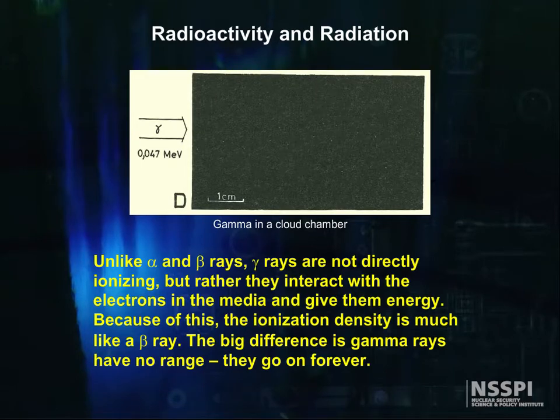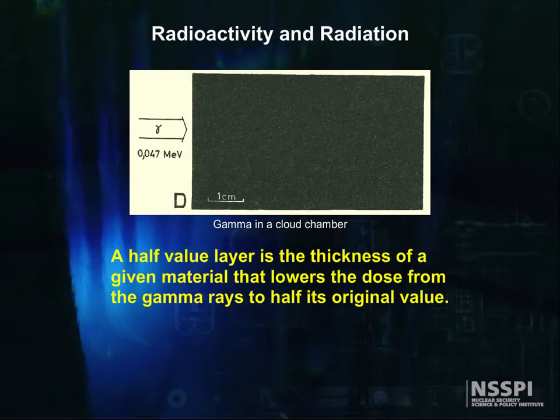They do have half value layers, however. By using shielding, we can lower the dose from gammas to whatever level we want, except zero. A half value layer is the thickness of a given material that lowers the dose from gamma rays to half its original value. Guess what two half value layers do?